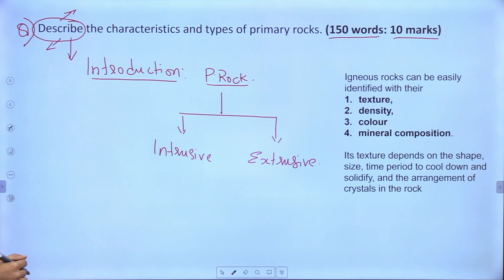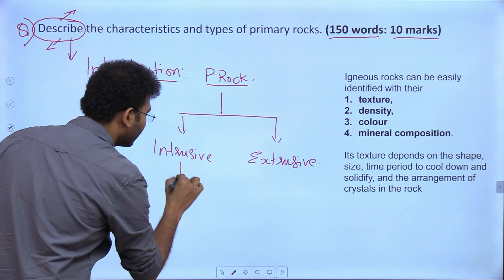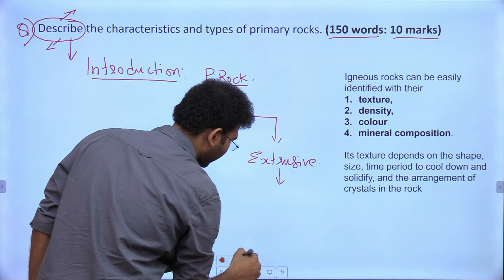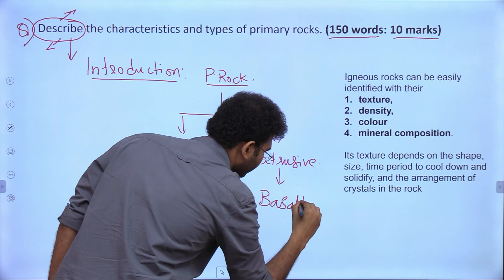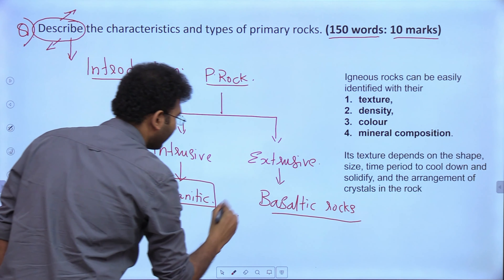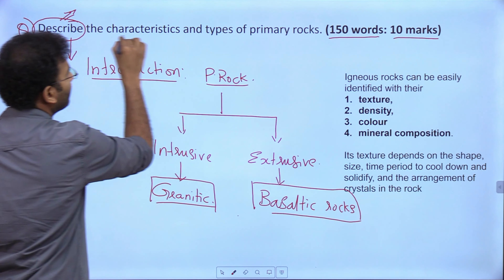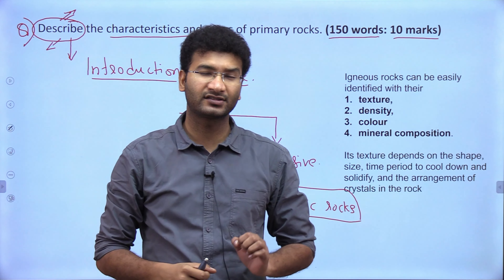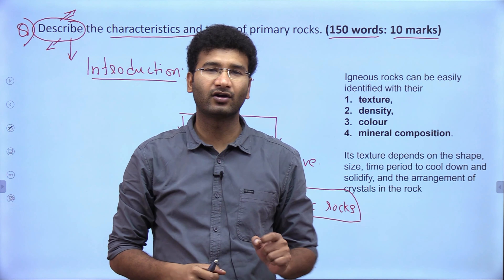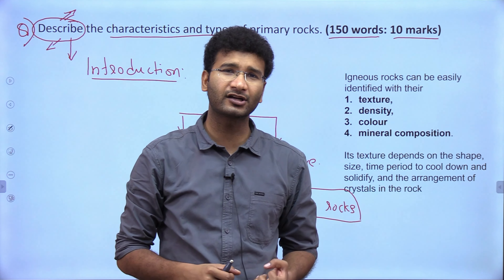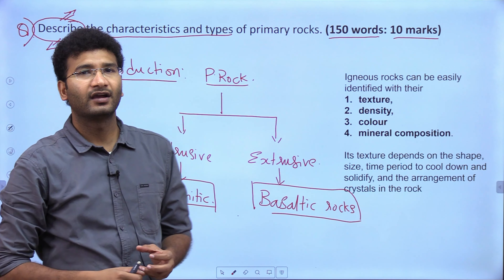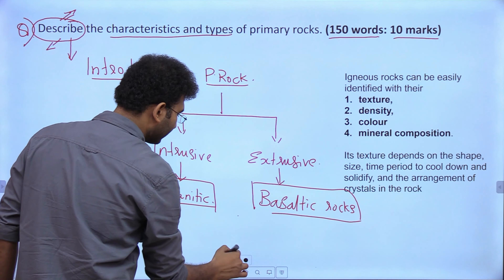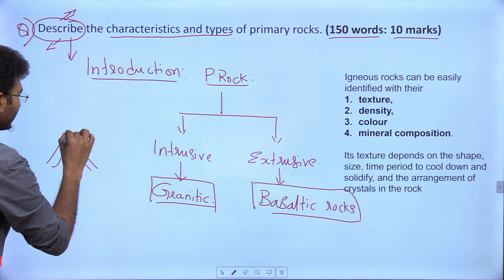Intrusive igneous rocks include granitic rocks and extrusive igneous rocks include basaltic rocks. The characteristics of a rock can be described in terms of physical and chemical properties — texture, density, color, mineral composition, and size of grains or crystals. These are key aspects to address when describing rock characteristics.